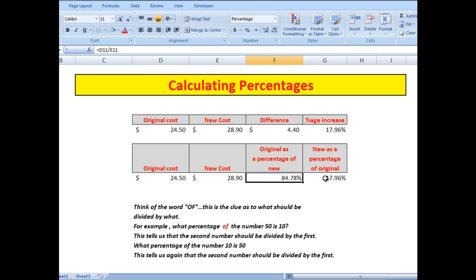Similarly, if I wanted to know what the new price is as a percentage of the original, then I would divide E11 by D11, and I get 117.96%. That virtually proves what I see up here because I can say that the new cost is 17.96% greater than the original cost.